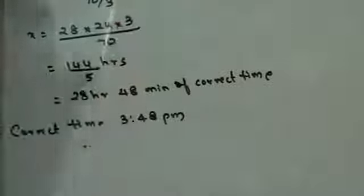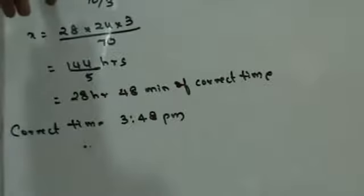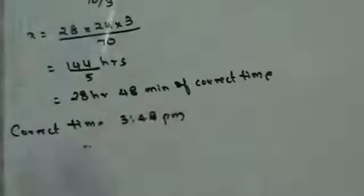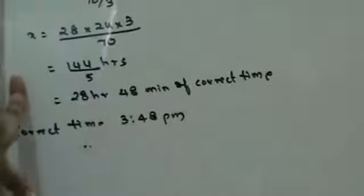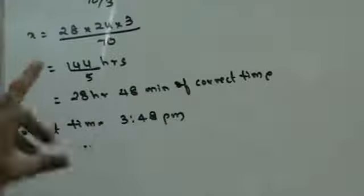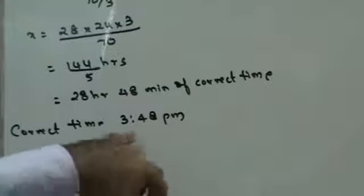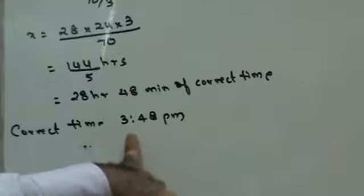If the watch is 40 minutes slow and is showing 23 hours 20 minutes, the actual time is 24 hours. So the actual time will be more than what is shown — in this case 3 hours 48 minutes is the correct time.